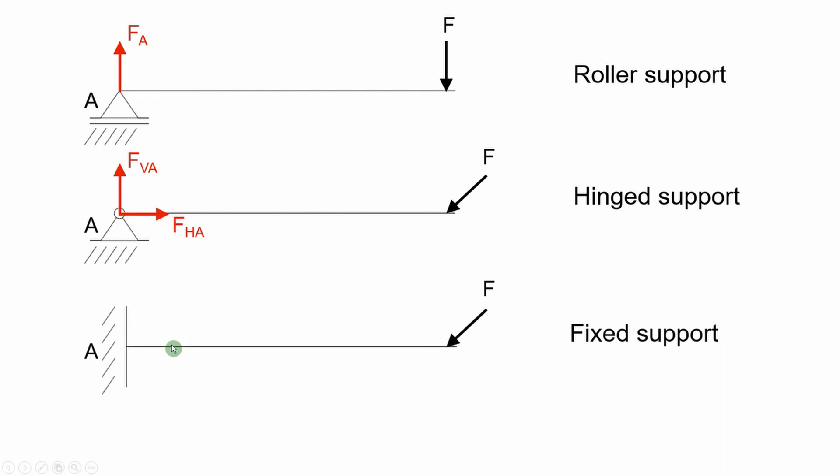And fixed support. Here all movements of the structure are prevented. Therefore three reactions will appear. One vertical reaction, one horizontal reaction, and one moment will appear in the center of the support when a force is applied.